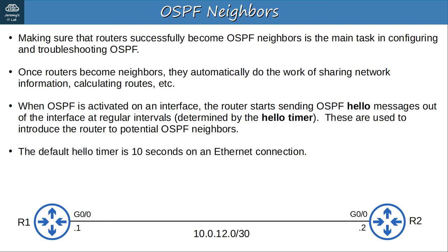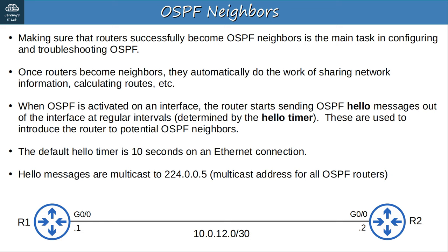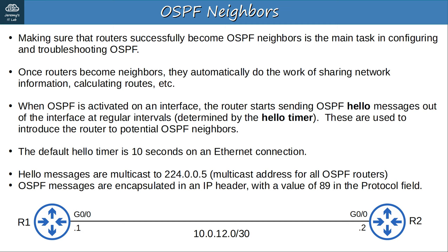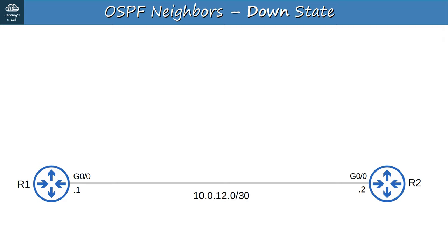OSPF hello messages are multicast to the IP address 224.0.0.5, which is the multicast address for all OSPF routers. For reference, RIP's multicast address is 224.0.0.9, and EIGRP's is 224.0.0.10. OSPF messages are encapsulated in an IP header, and the protocol field has a value of 89 to indicate OSPF. For OSPF routers to become neighbors, they have to go through various neighbor states. I recommend taking notes for this section.